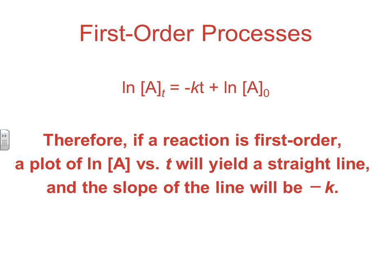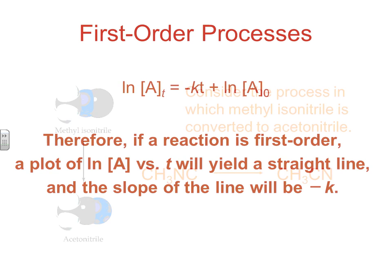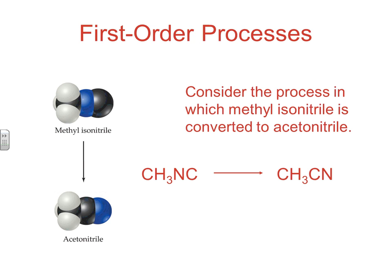If the reaction is first order, when you plot the natural log of the concentration versus time, you're going to get a straight line. The slope of that straight line, since it's downhill, would be negative k. That's our first order relationship.